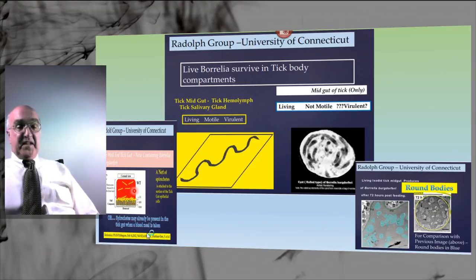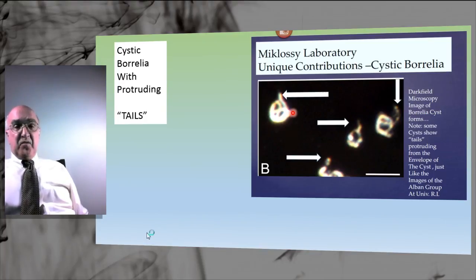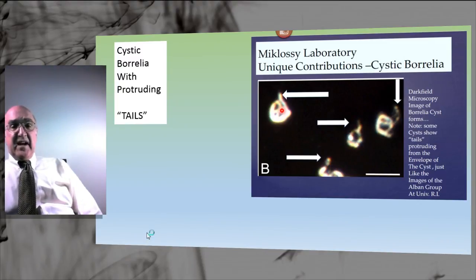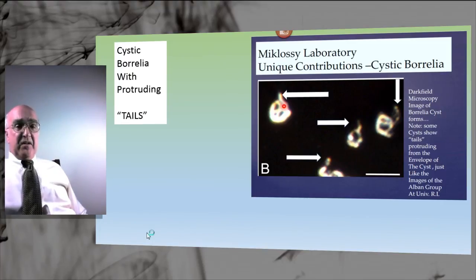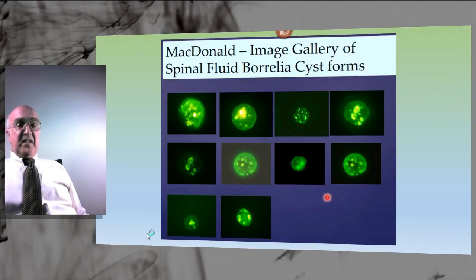Work from Dr. McClossey shows that cystic forms of the spirochete will sometimes show tails protruding from the rounded edge of the cyst and sticking out into neighboring fluid, as also seen in atomic force microscopy. These round bodies with tails, under ideal conditions, will reform the corkscrew spirochete — reforming beginning at the tail end, elongating as the cyst diminishes in size, until a spiral motile spirochete emerges from the round body or cystic form.